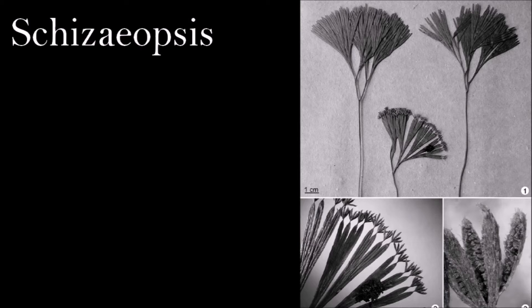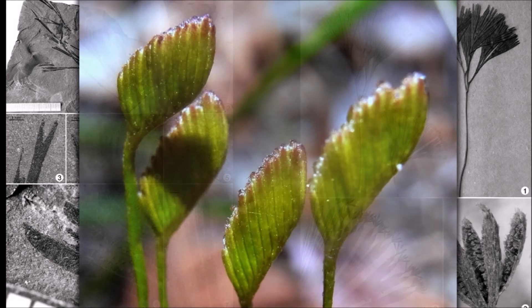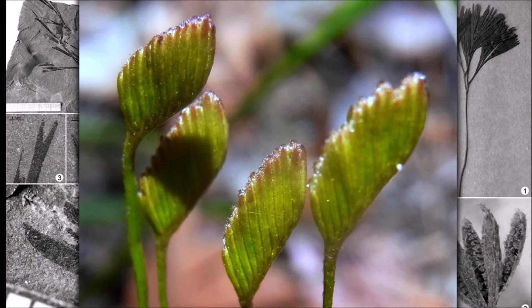The leaves of this fern consist of repeatedly dividing, single-veined, narrow segments ending in rounded or pointed tips. When fertile, the narrowest segments have folded, pod-like structures at their end, within which are 8–12 sporangia containing spores that are about 80 micrometers in diameter. This fern is very similar in structure to some living species of Gleichenia, except for its different type of spores. It is very likely that it represents an early stage in the evolution of Gleichenia.